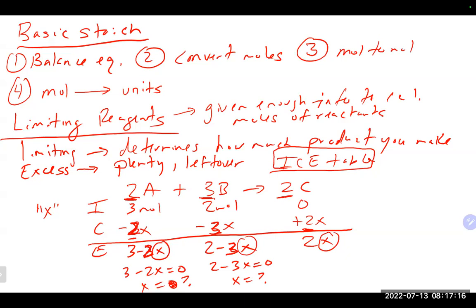Percent yield is the actual yield divided by the theoretical yield, times 100%. The actual yield is typically what you get when you do the experiment — it's usually given to you in textbook problems. The theoretical yield you need to calculate using stoichiometry, whether it's a limiting reagent problem or not.